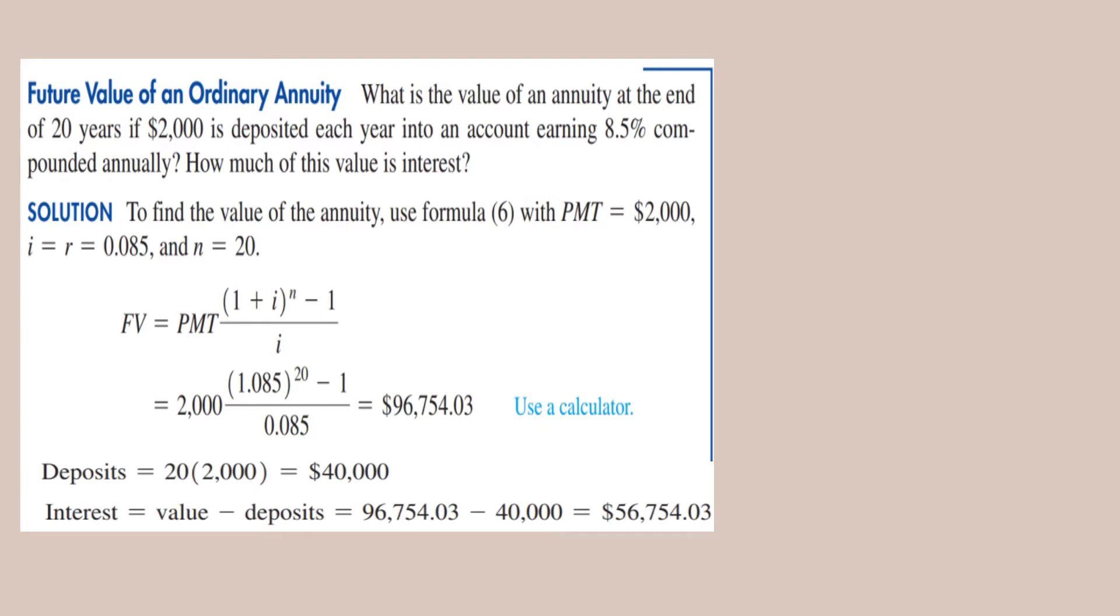Since the payment is $2,000, the rate of interest is 8.5%, which is 0.085, and that is your i because it is paid annually, the future value will be $96,754.03 using the formula FV = PMT × [(1 + i)^n - 1] / i.